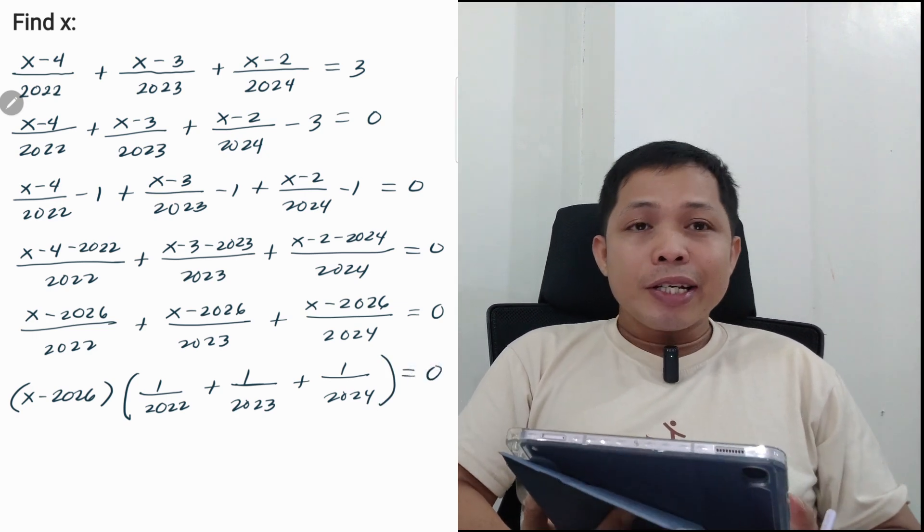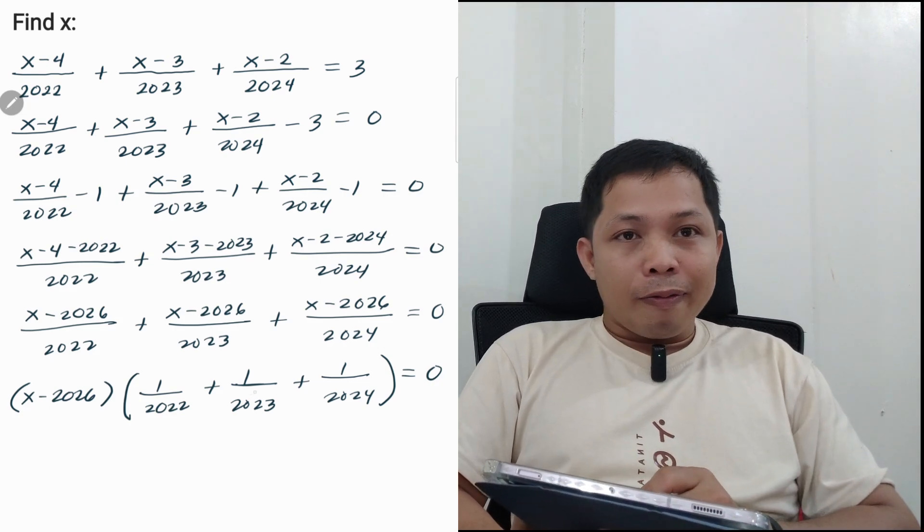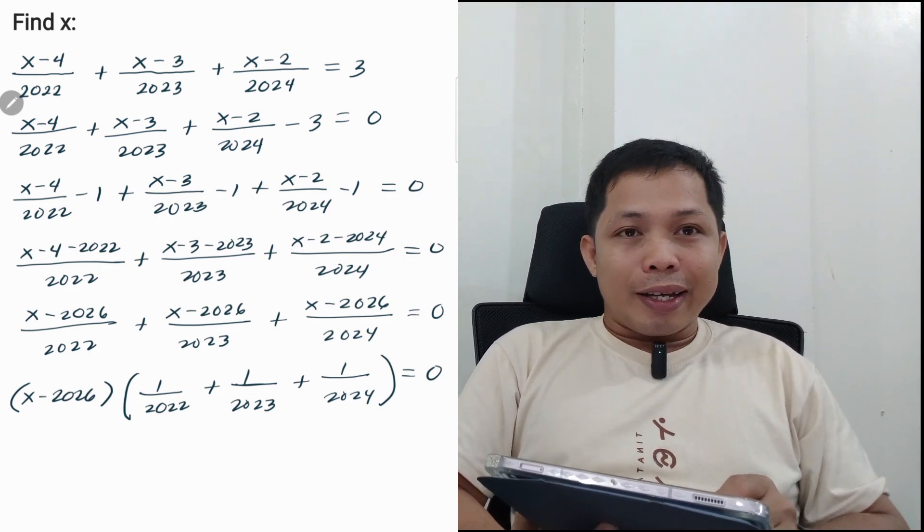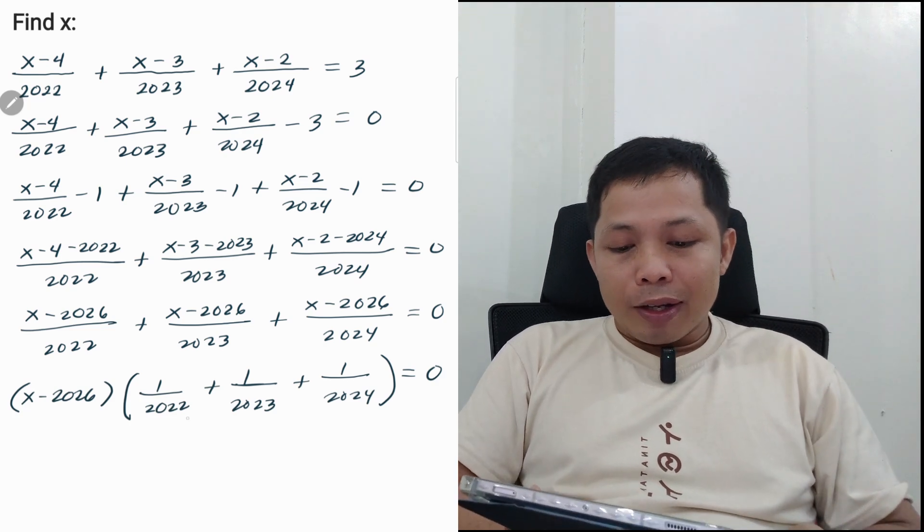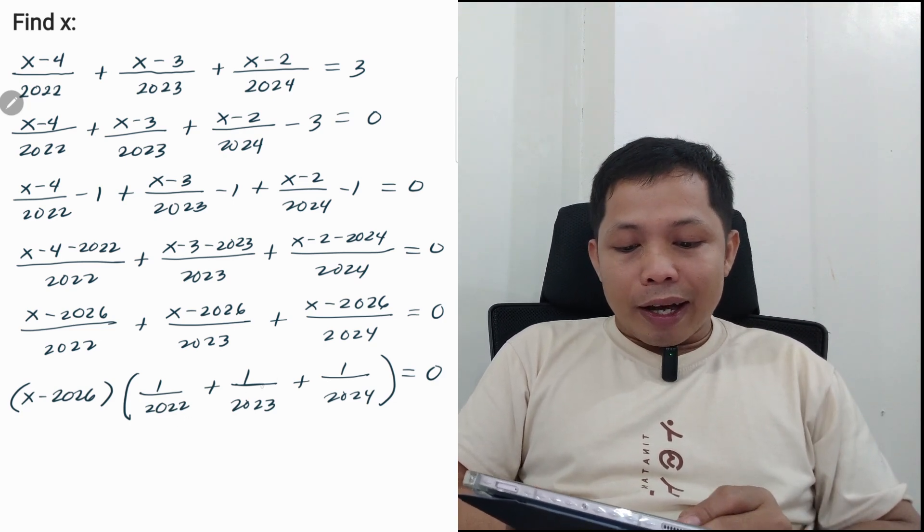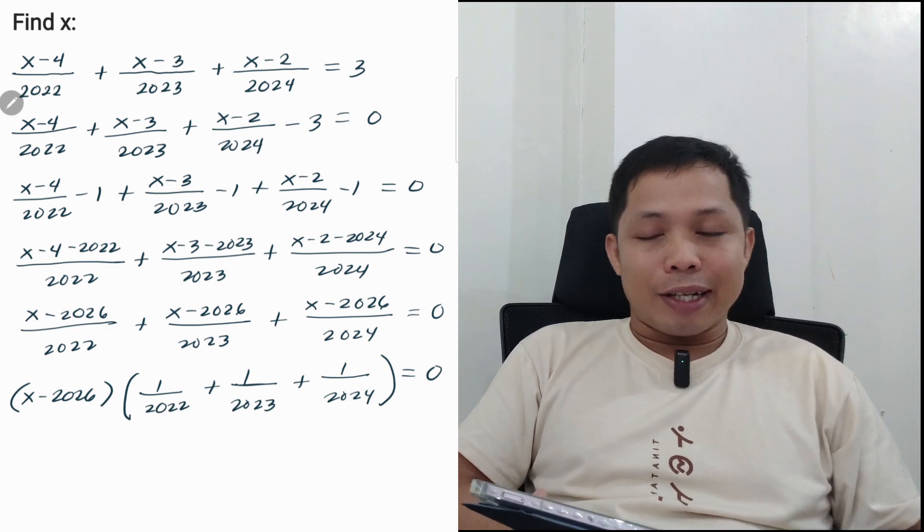Now, using the zero product property, either this first factor or the other factor is equal to 0. So basically, this second factor cannot be equal to 0, so that is greater than 0. So we can cancel this out.